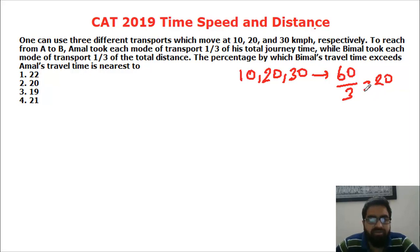The second part when Bimbal is travelling, he is travelling each of the distances with these speeds 10, 20 and 30 respectively.